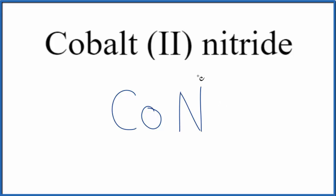So we have our element symbols. We know that cobalt is a transition metal, we see this Roman numeral II. This Roman numeral II here tells us the charge, so we got 2+ for the cobalt, and then we need to look up the charge for the nitrogen.